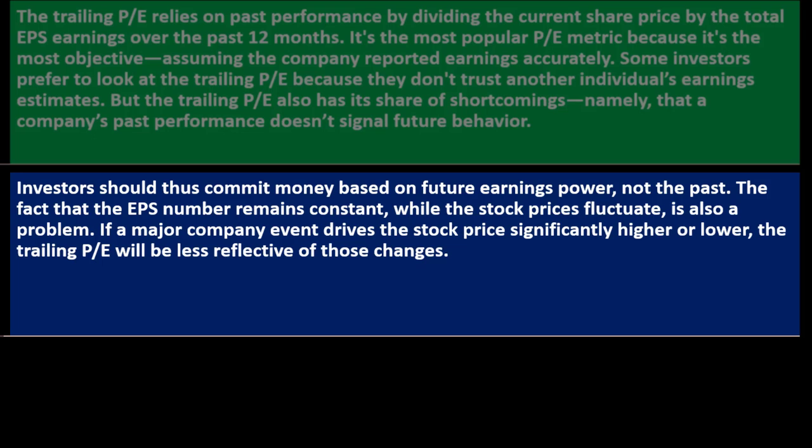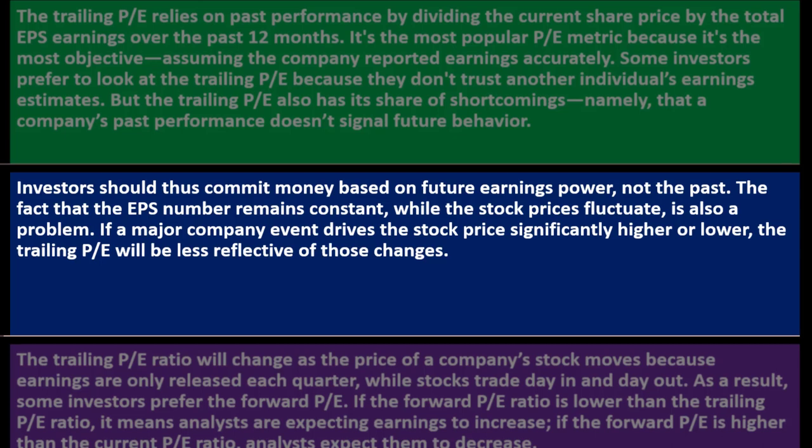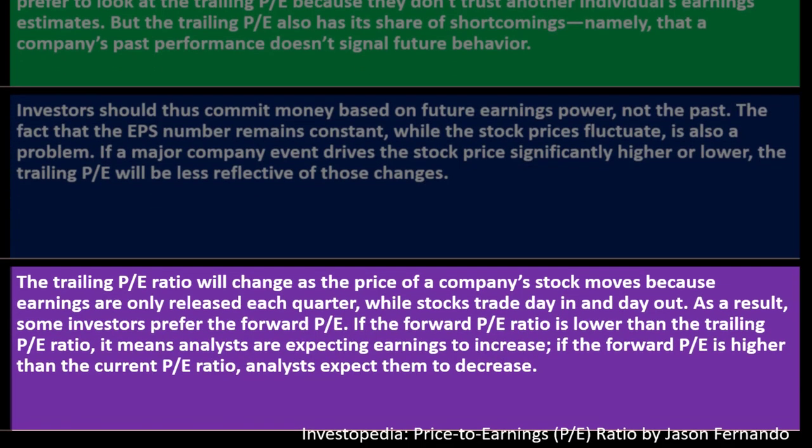Investors should commit money based on future earnings power, not the past. The fact that the EPS number remains constant while the stock price fluctuates is also a problem — if a major company event drives the stock price significantly higher or lower, the trailing P/E will be less reflective of those changes. Since earnings are only released each quarter while stocks trade day in and day out, some investors prefer the forward P/E.